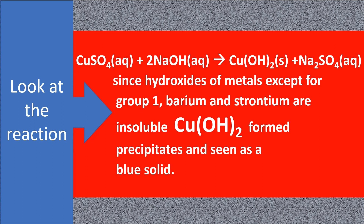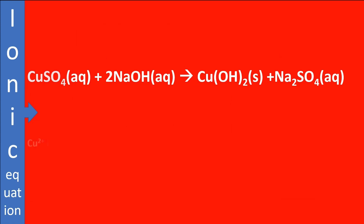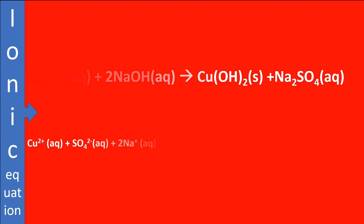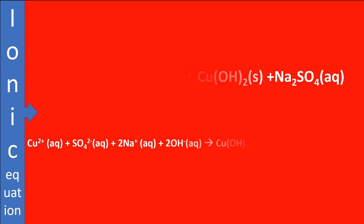Out of the four substances in this reaction, copper 2 hydroxide is the only insoluble solid, therefore it will appear as a precipitate. Soluble copper 2 sulphate dissociates into copper 2 ions and sulphate ions. Soluble sodium hydroxide dissociates into sodium ions and hydroxide ions. Insoluble copper 2 hydroxide doesn't dissociate into ions. Soluble sodium sulphate dissociates into sodium ions and sulphate ions.